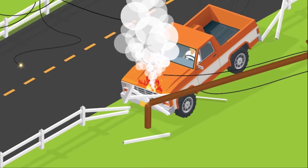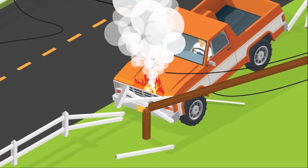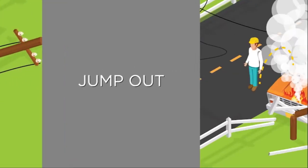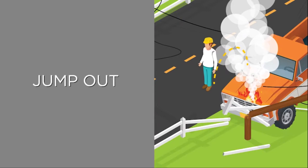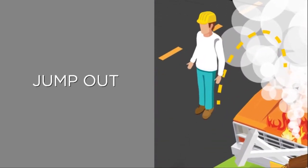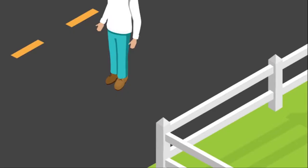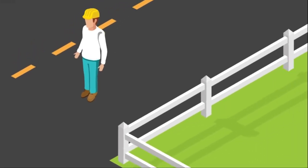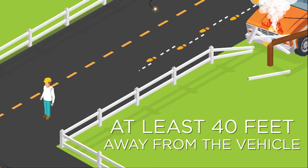You should only exit the vehicle if a fire occurs, which is rare. If this happens, jump out and away from the vehicle, making sure no part of your body or clothing touches the ground and the vehicle at the same time. Land with both feet together and in small, shuffling steps, move at least 40 feet away from the vehicle to safety.